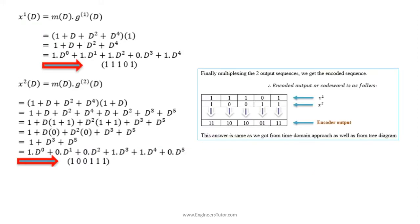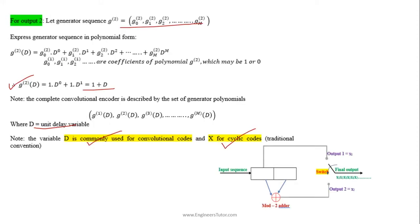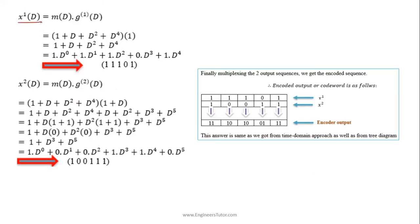After finding the polynomials, we find the output polynomials for each output. From block codes we know x = m·g, where m is the message signal and g is the generator matrix. We apply the same formula to find the polynomial expression for output 1 of the encoder. We multiply the message polynomial by the generator sequence of the first output, obtaining 1 + d + d^2 + d^4.